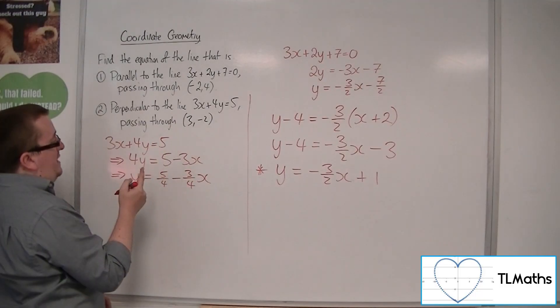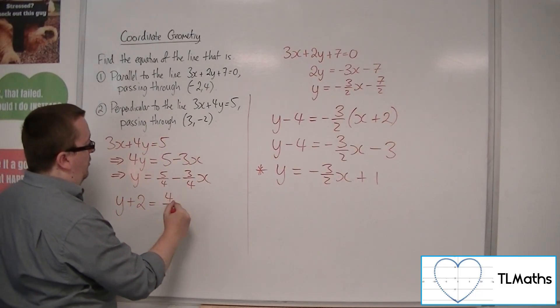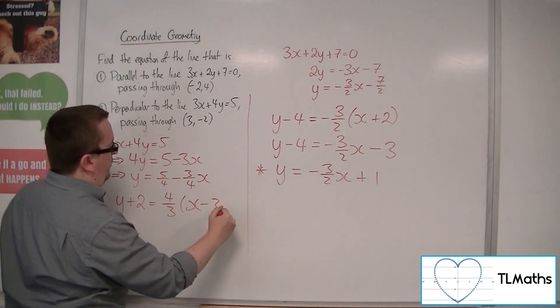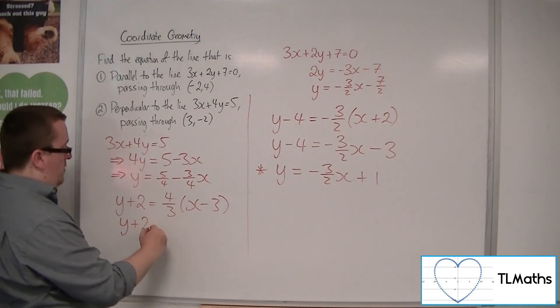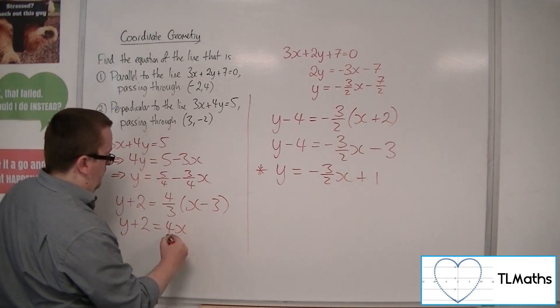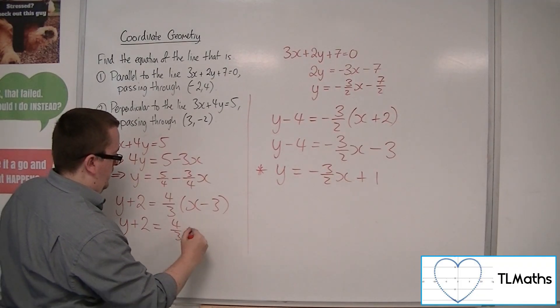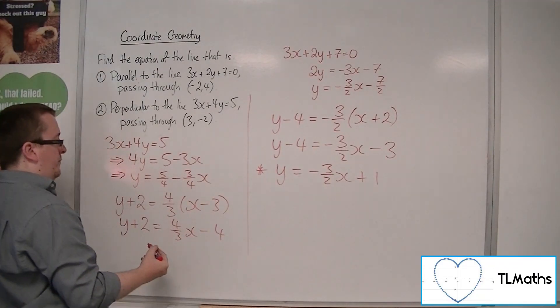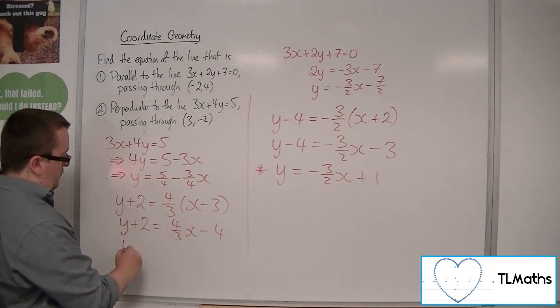So if it's going through 3, 2, then y plus 2 must be equal to 4 thirds x minus 3. So if I expand that bracket, I get 4 thirds x minus 4, 4 thirds times minus 3 is minus 4, then take the 2 from both sides.